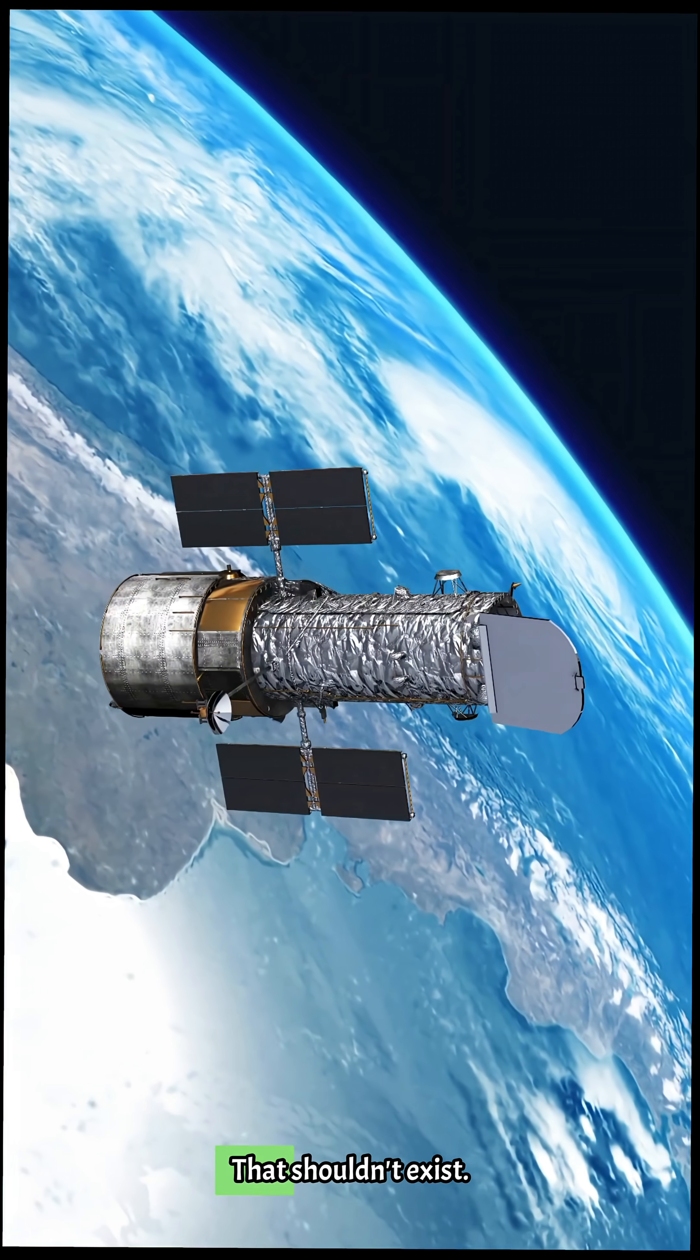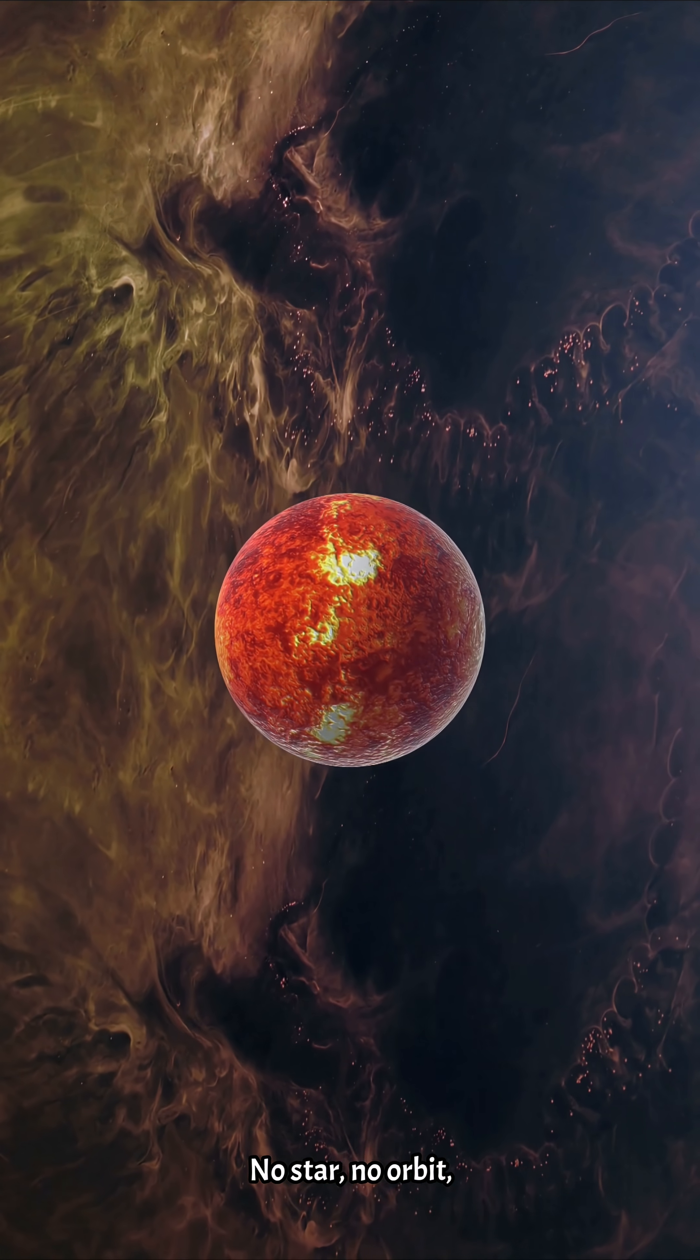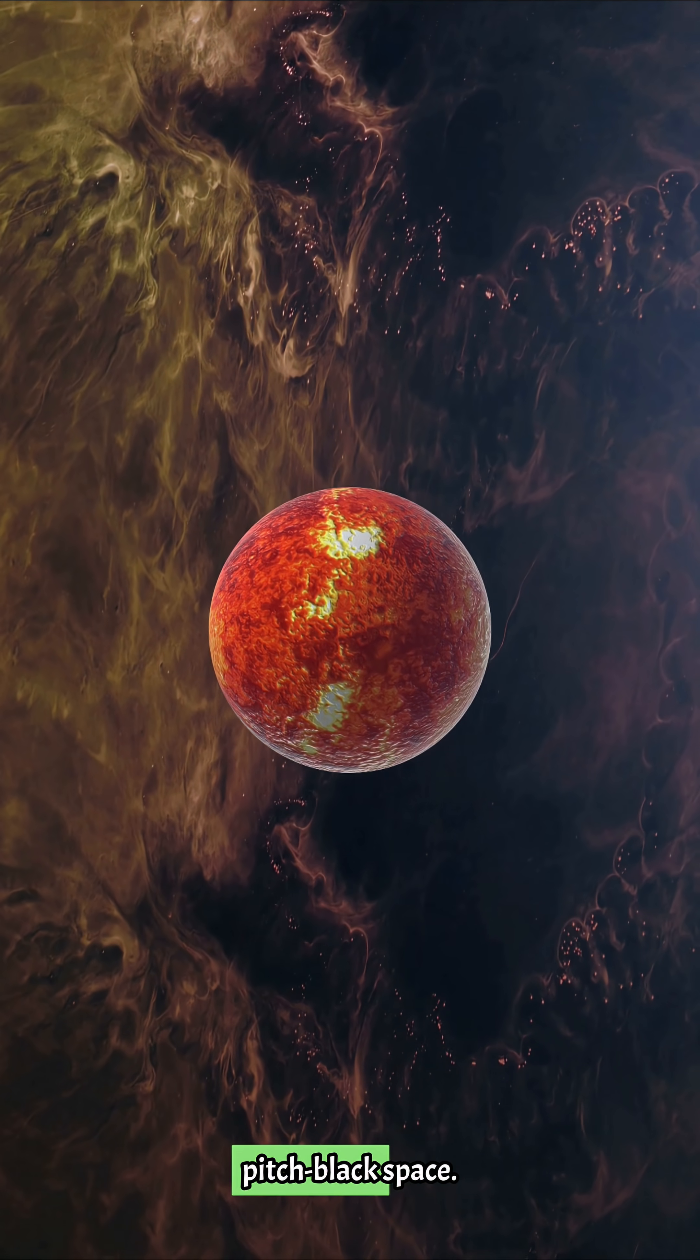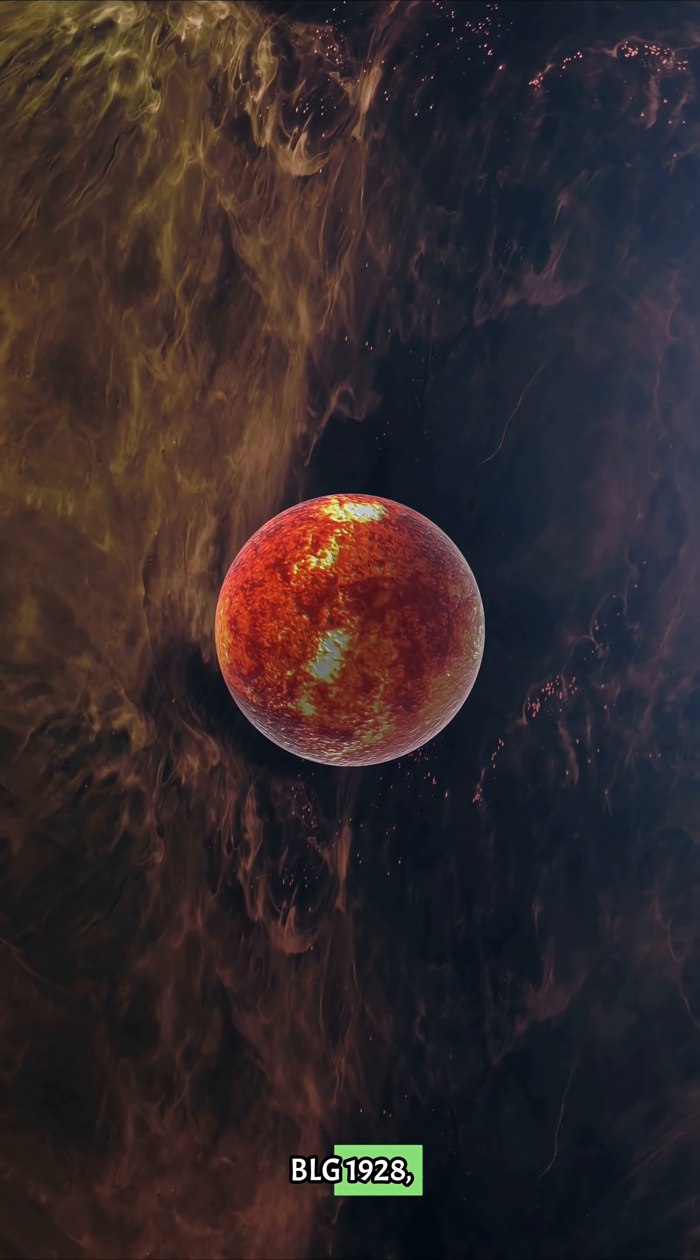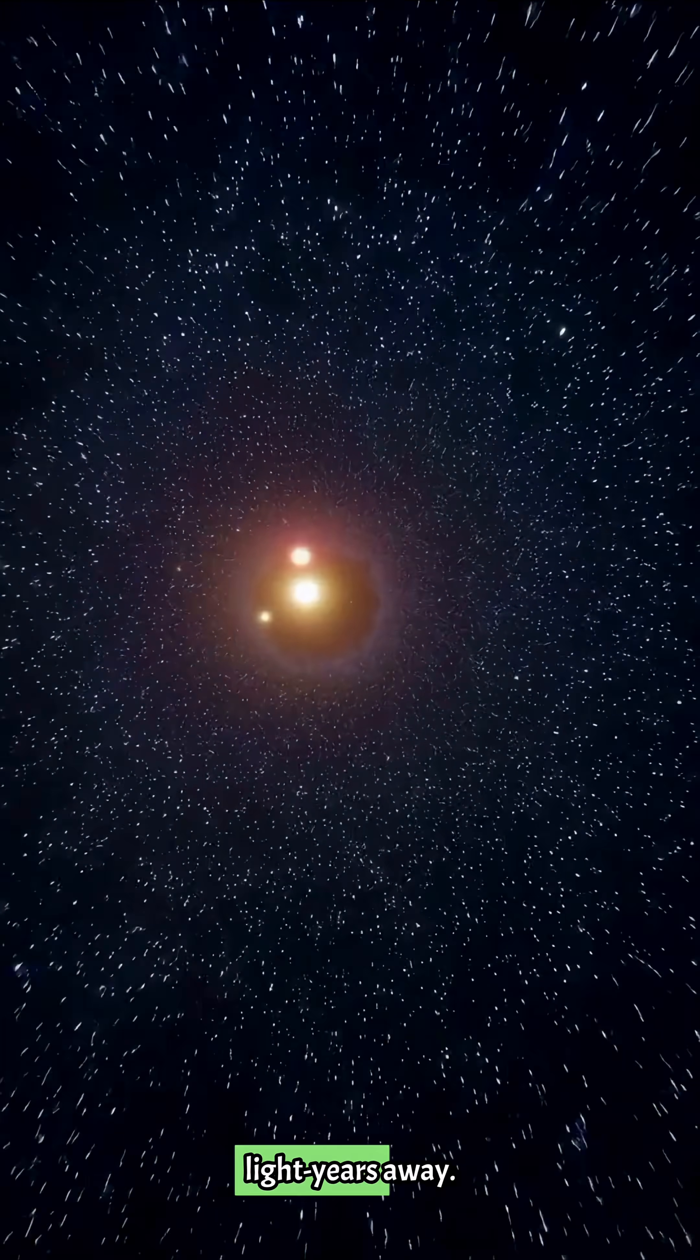NASA just found a planet that shouldn't exist. No star, no orbit, just floating in pitch-black space. It's called OGLE 2016 BLG 1928, and it's just 3,000 light-years away.